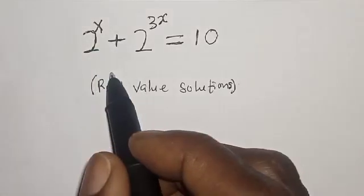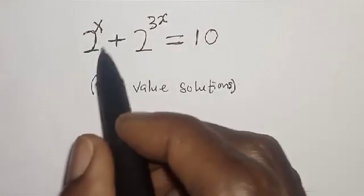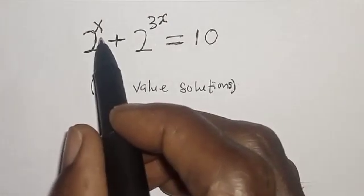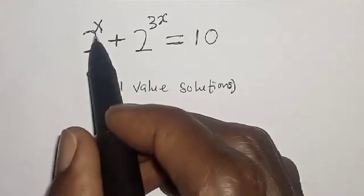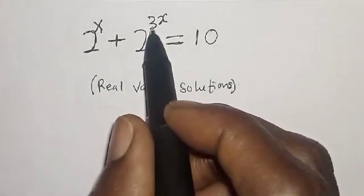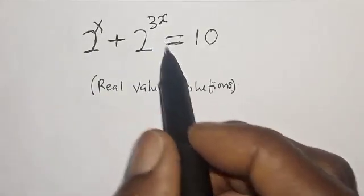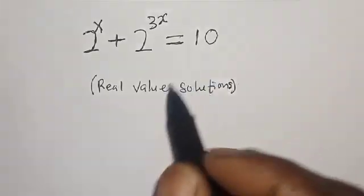Welcome to Math Gist. In this class we want to find the value of x from this equation: 2 raised to power x plus 2 raised to power 3x is equal to 10.